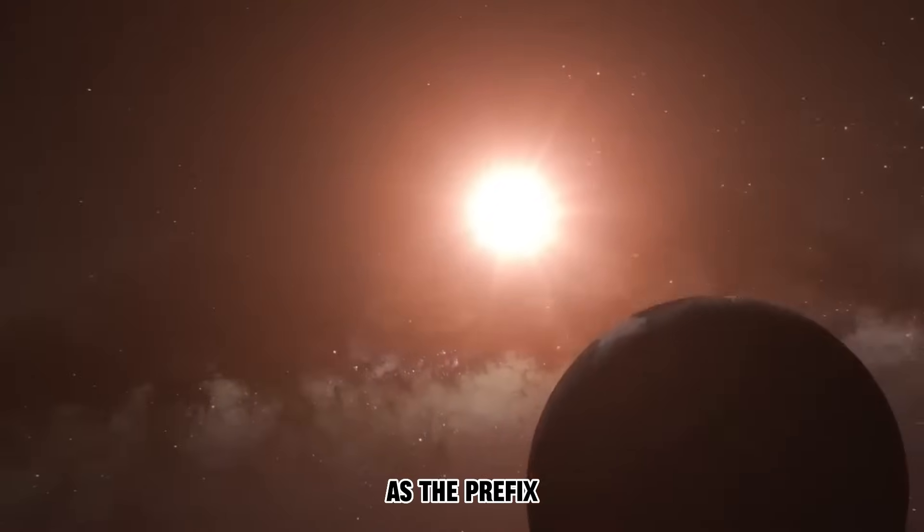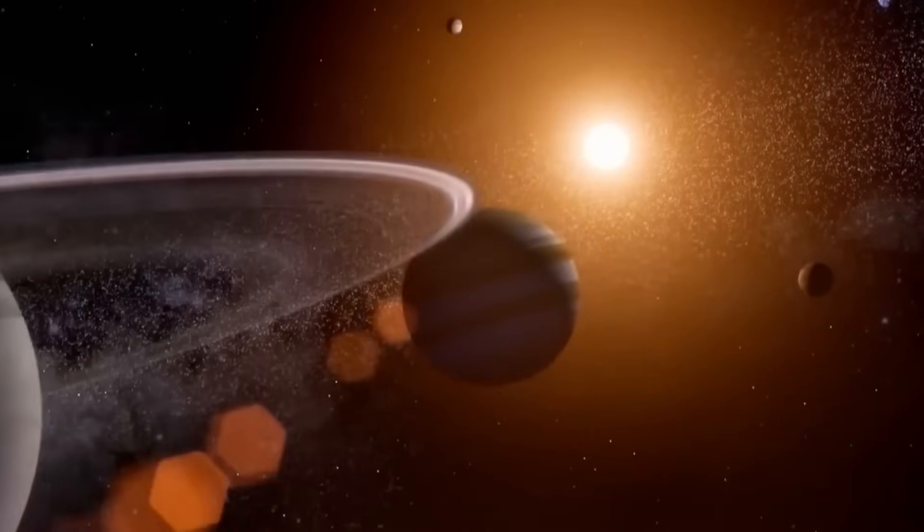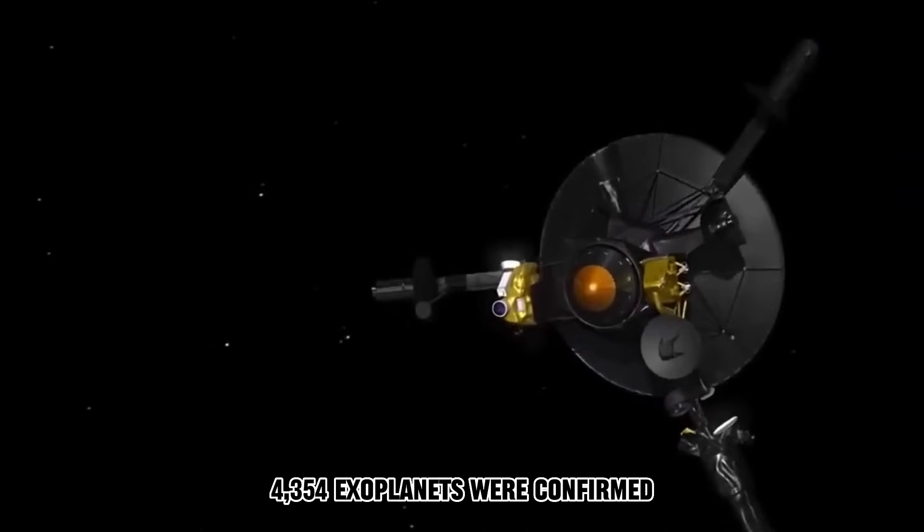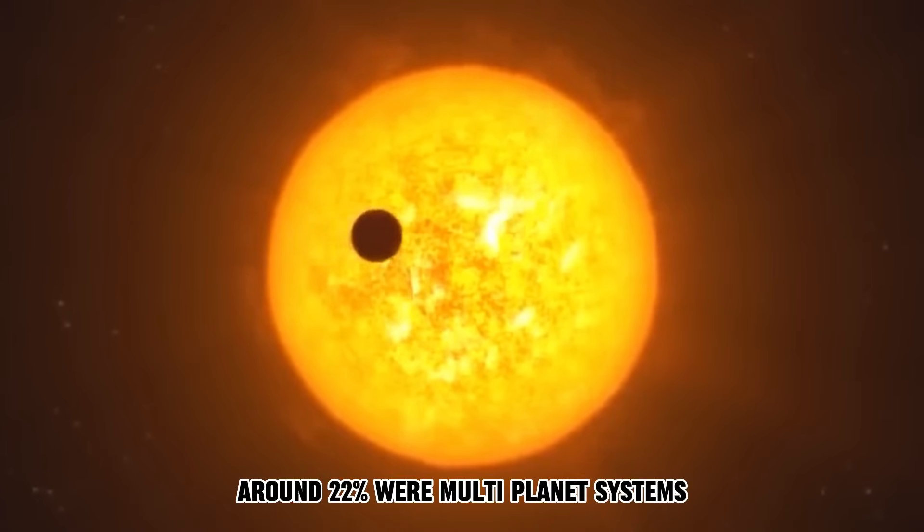As the prefix EXO suggests, exoplanets orbit stars other than our sun. By October 1, 2020, 4,354 exoplanets were confirmed in 3,218 systems. Around 22% were multi-planet systems.